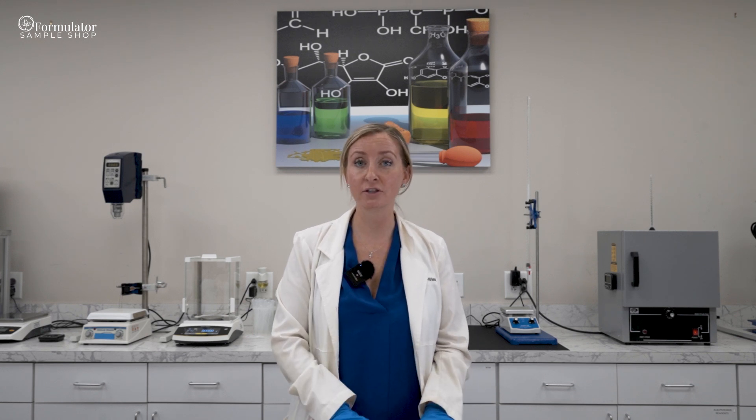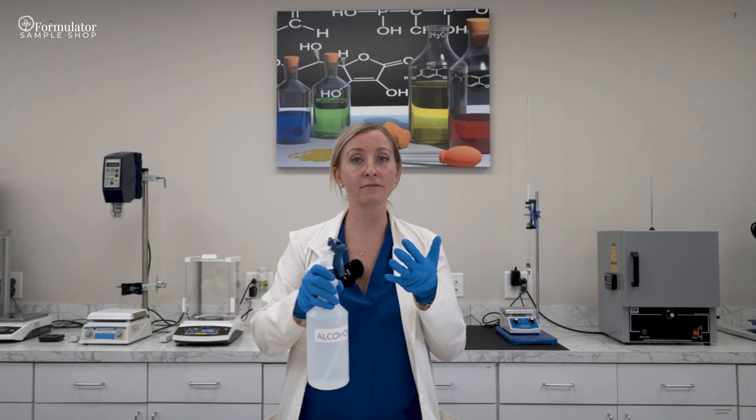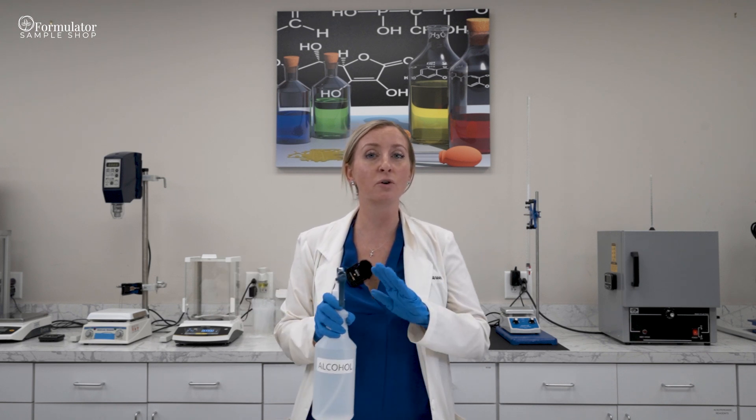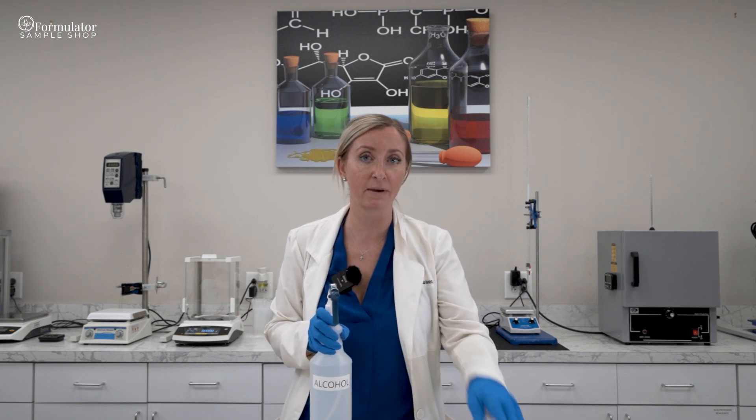Once you're done sterilizing all of your lab equipment and before you start your batch, you always want to make sure that you spray your PPE as well. So you would use your 70% alcohol solution and spray your gloves thoroughly. That way you make sure that you don't contaminate anything by touching the batch with your dirty gloves.